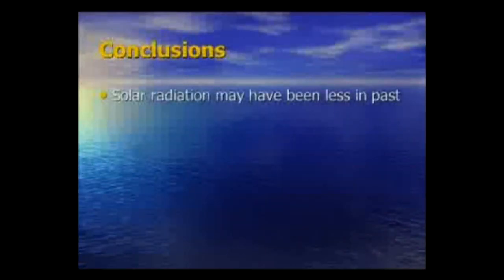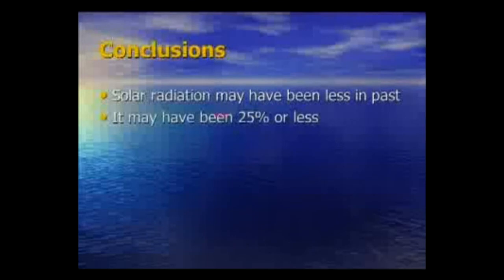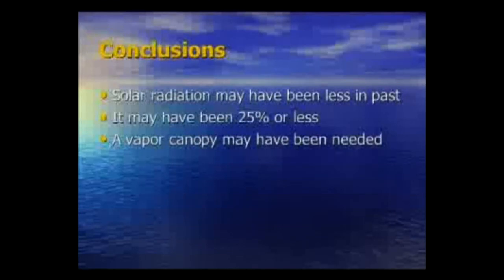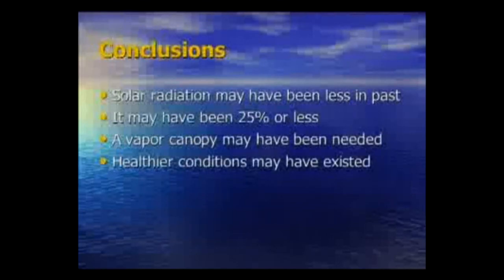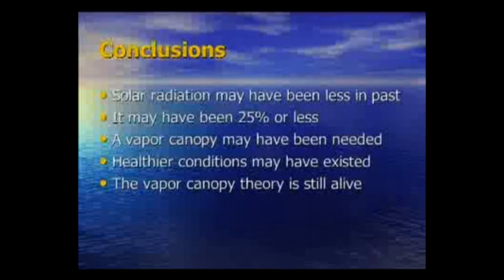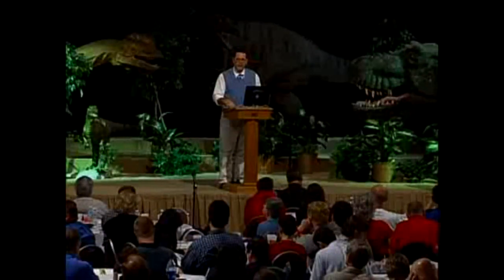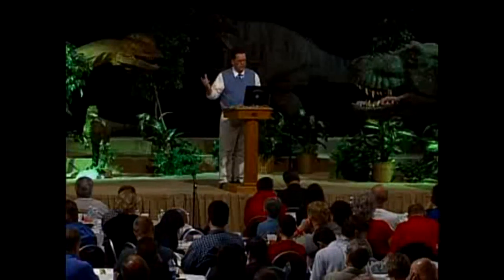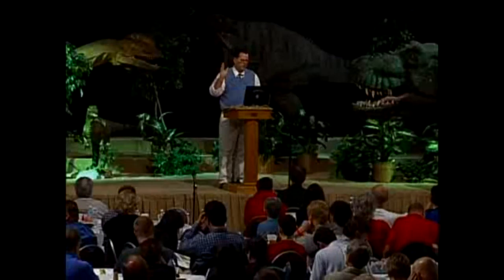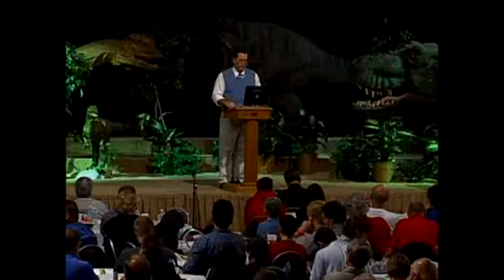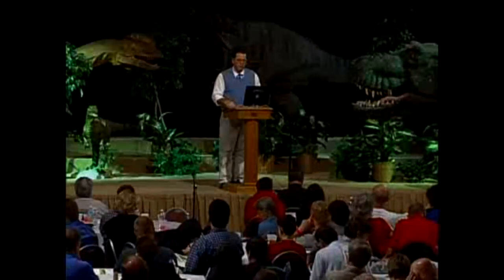Here are the conclusions: The solar radiation may have been less in the past — possibly as much as 25% or less if some of these models are valid. A vapor canopy may have actually been needed to keep the atmosphere from getting too cold. And healthier conditions may have existed if there was enough mass in the canopy to increase surface pressure. The vapor canopy theory is still alive — not exactly well, but alive. A lot of people said it's not working, so give it up, but I'm going to keep working on it and reporting as the research continues.